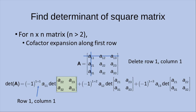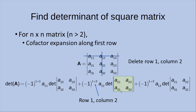For the second term of the co-factor expansion, the power of minus 1 becomes 1+2, which equals 3, because we put row 1 and column 2 here. We do the expansion along the first row, taking the second element of the first row, and then take the determinant of the matrix after removing the first row and the second column. That's why we have these four values coming out to find the determinant.